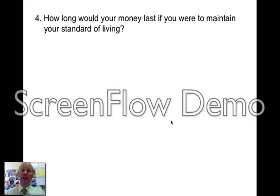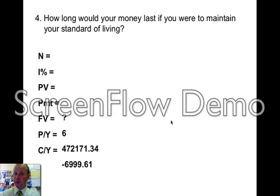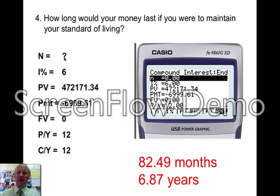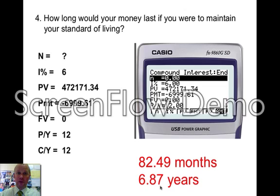So how long will your money last if you're going to keep that standard of living going? Well, once again, present value question. N you don't know — that's what you're trying to find — how long will your money last. I is 6. That's your present value — that's how much money you've saved up. This is what your payment's going to be — $7,000. Future value is 0. P/Y is 12, C/Y is 12. You'll end up with 82.49 months, and if you divide that by 12, you get 6.87 years. So if you're going to keep your standard of living, you can only last 6.87 years — nearly seven years — on that kind of money. So it means you will need to increase your super to be able to do that.